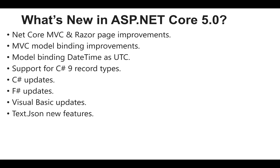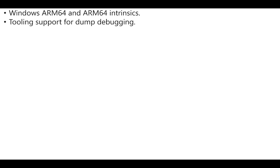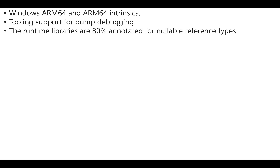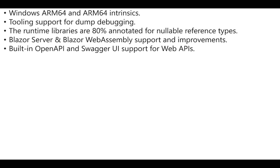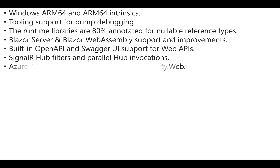Additional features include: System.Text.Json new features, single file apps, app trimming, Windows ARM64 and ARM64 intrinsics, tooling support for dump debugging, runtime libraries 80% annotated for nullable reference types, Blazor Server and Blazor WebAssembly support and improvements, built-in OpenAPI and Swagger UI support for web APIs, and SignalR hub filters and parallel hub invocations.